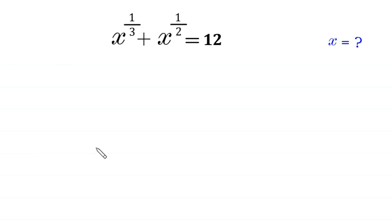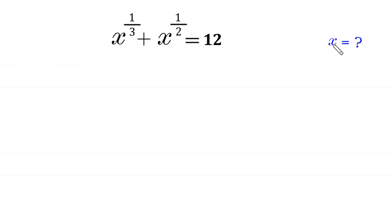Hello, welcome to how to solve this very nice algebra equation. x to the power 1 over 3 plus x to the power 1 over 2 is equal to 12. We need to find all possible values of x. So, let us start.